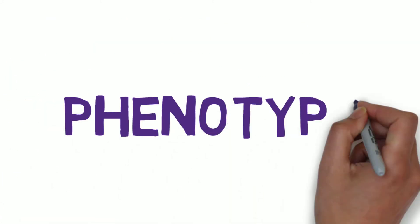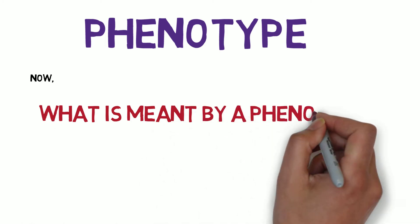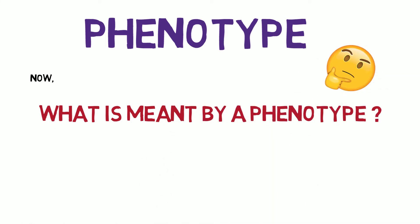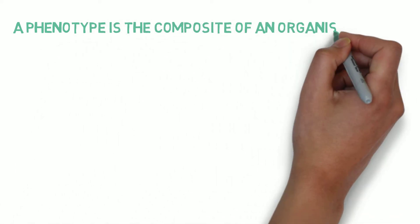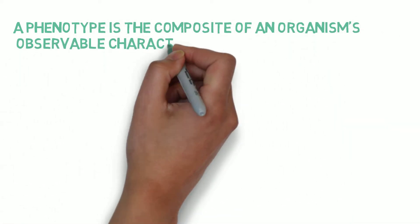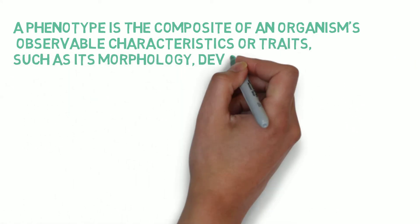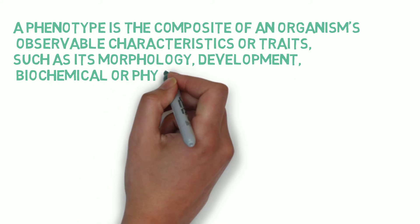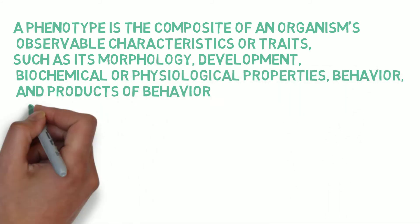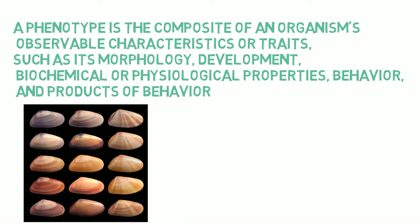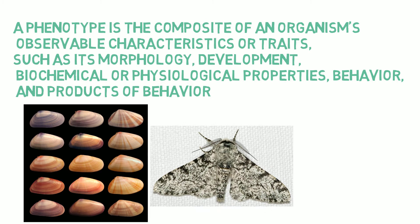Phenotype. What exactly does phenotype mean? How can we elaborate it? It is stated that a phenotype is the composite of an organism's observable characteristics or traits, such as its morphology, development, biochemical or physiological properties, behavior, and products of behavior, such as pattern of shells, and also various colors of butterfly and moths.